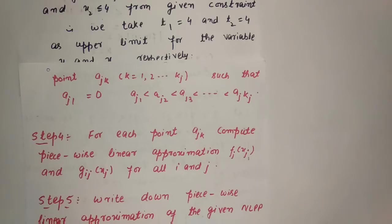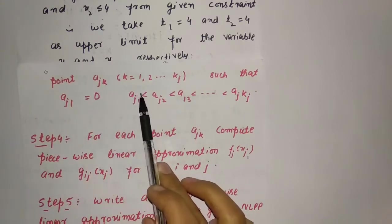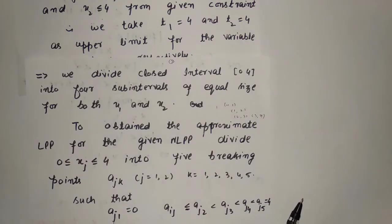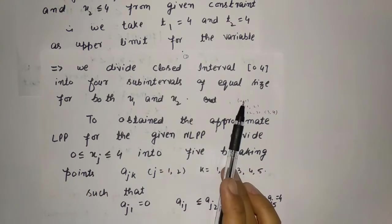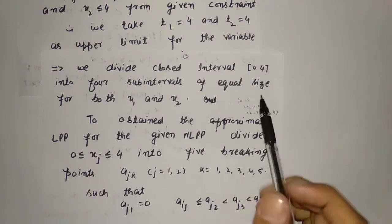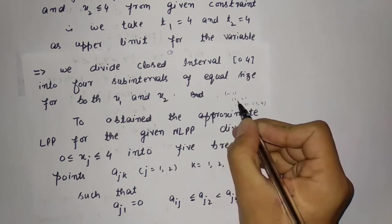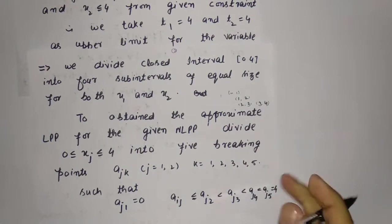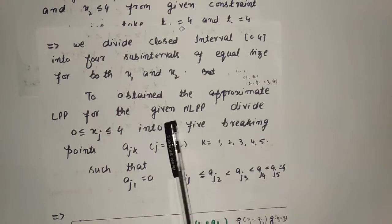We divide this interval into breaking points. The breaking points are a_jk where k = 1 to K, such that a_j1 = 0 and a_j1 < a_j2 < a_j3 and so on. We divide the closed interval [0, 4] into 4 sub-intervals: [0,1], [1,2], [2,3], and [3,4] — four equal sub-intervals. We now need to obtain the approximate linear programming problem for the given NLPP.